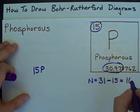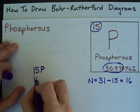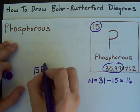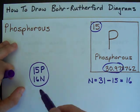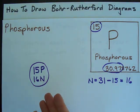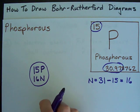That means there are 16 neutrons, and so you write 16N for neutrons, put a small circle around that, and this represents the nucleus of your phosphorus atom, protons and neutrons inside.